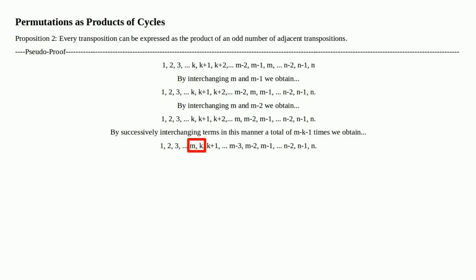By successively interchanging terms in this manner, a total of M minus K minus 1 times, we obtain the following ordering. We've moved M all the way over, past K — so M has been taken and moved over; now it's on the other side of K.